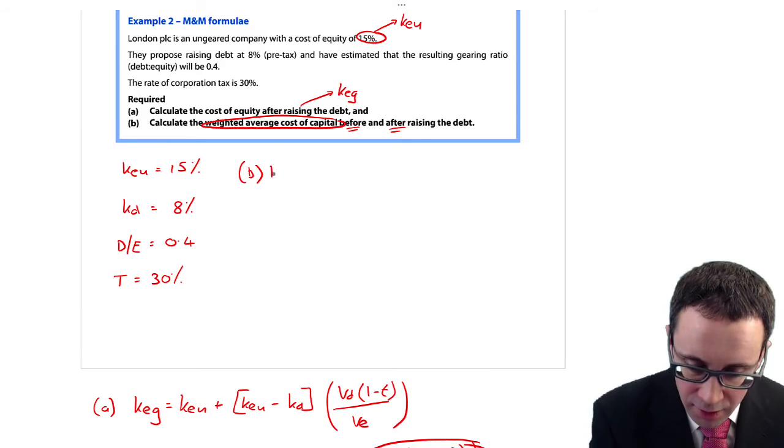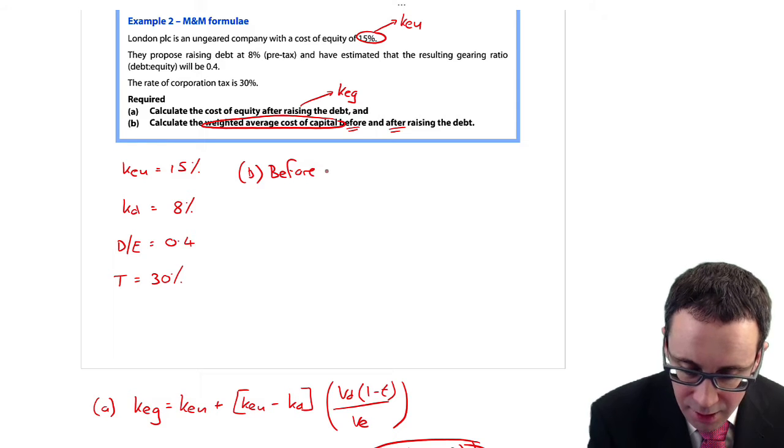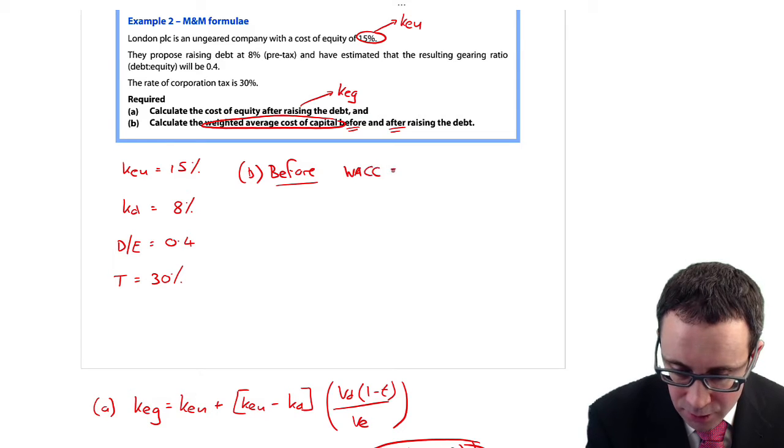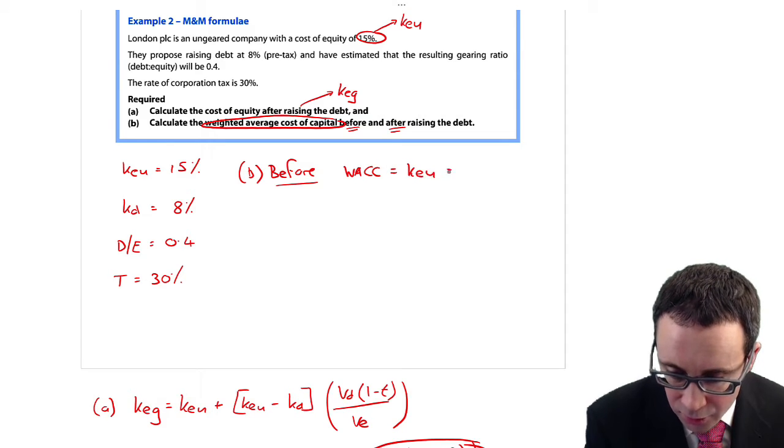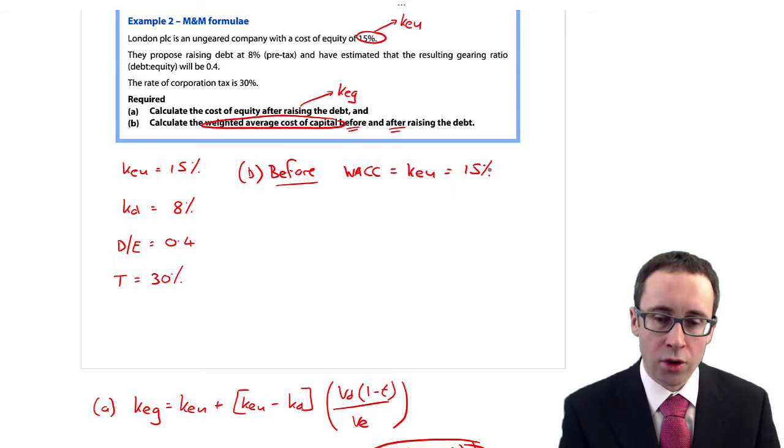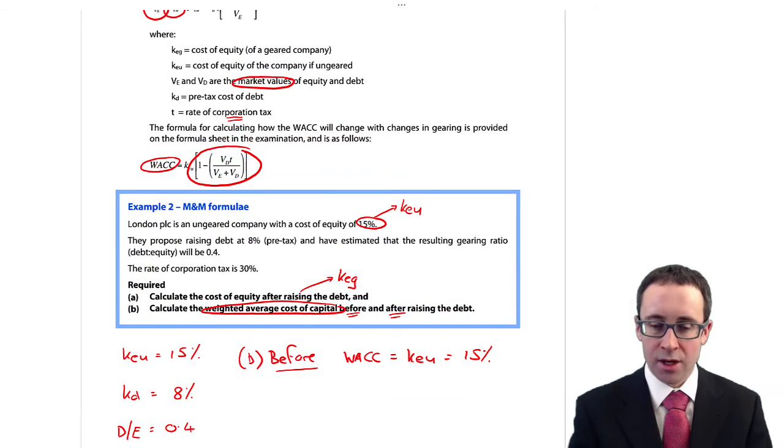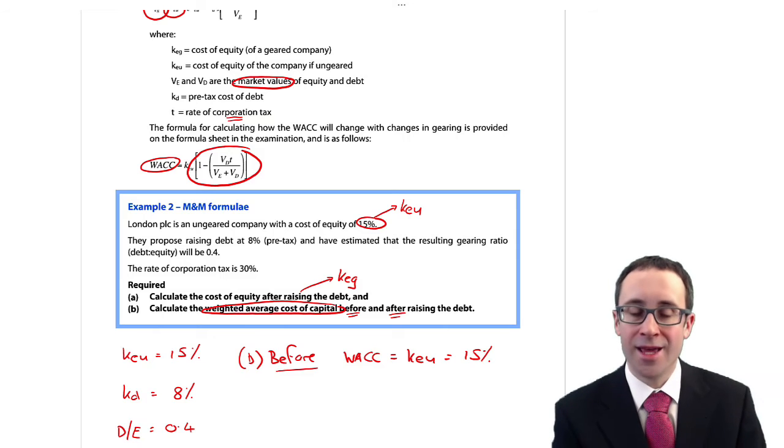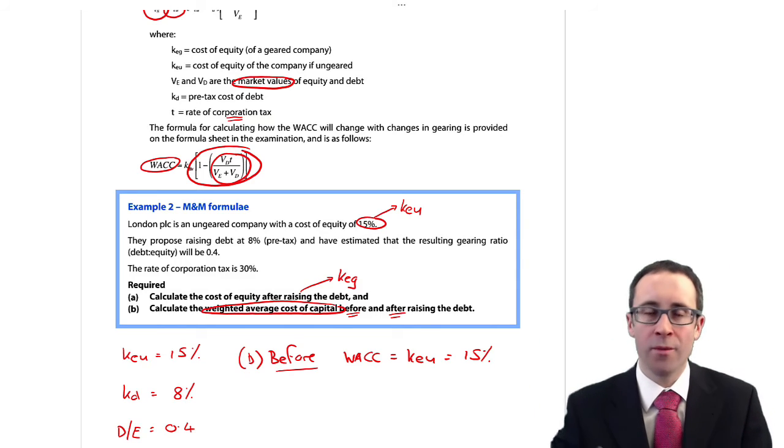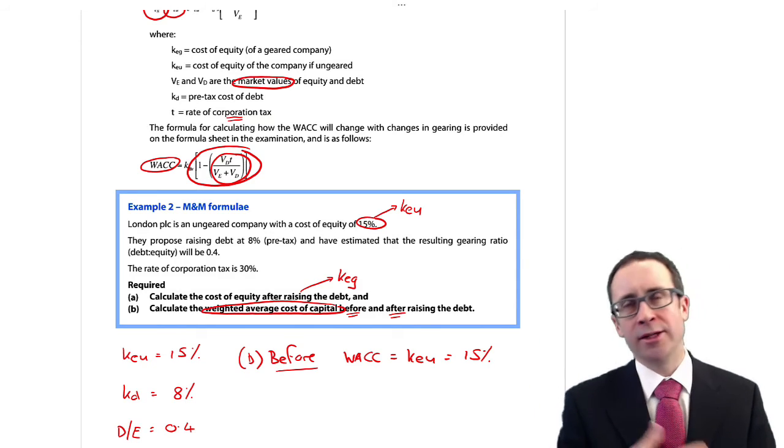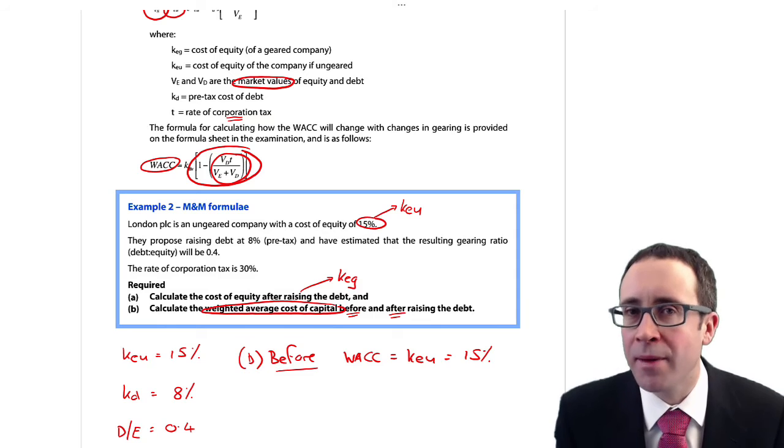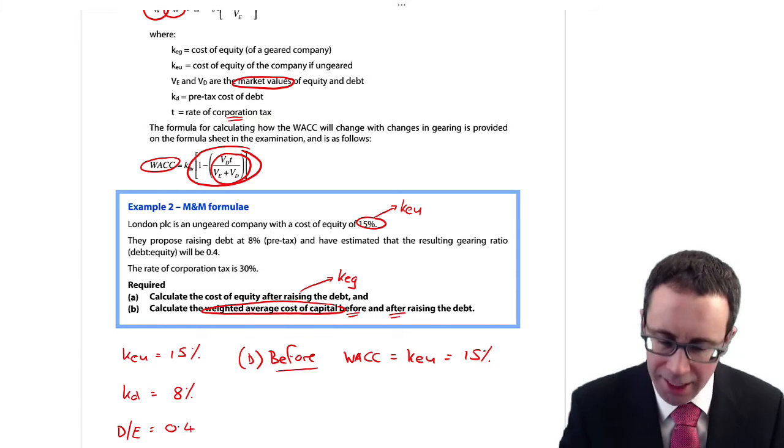Part B is to then go through and work out the weighted average cost of capital before and after. So if we're going through there and thinking about it before, well, that's nice and straightforward because the weighted average cost of capital will be equal to the cost of equity for the ungeared company, which is at 15%. You could go through and put it in as the formula if you so wish because before raising any debt, then the value of debt is 0. So what happens here is if the value of debt is 0, then that part of the formula collapses to 0. 1 less 0 is 1. 1 multiplied by the cost of equity for the ungeared company is the cost of equity for the ungeared company.